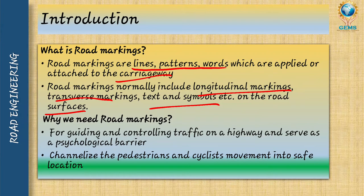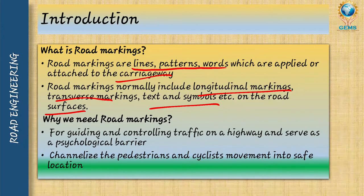Next, why do we need road marking? Road marking is for guiding and controlling traffic on a highway and serves as a psychological barrier. It also helps in channelizing pedestrian and cyclist movement into safe locations. However, if we violate the rules and regulations of traffic, it will cause accidents.